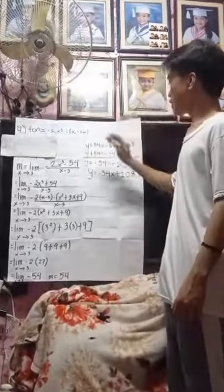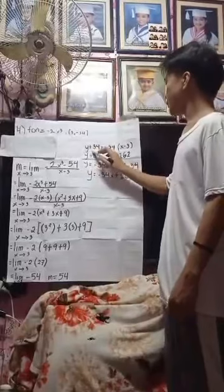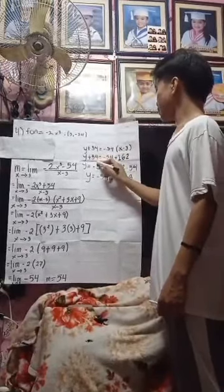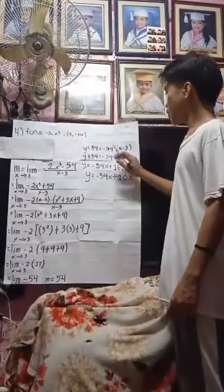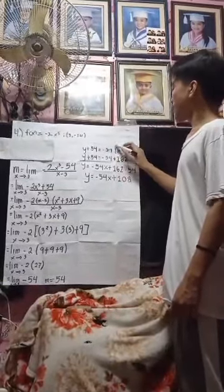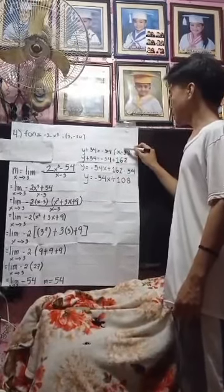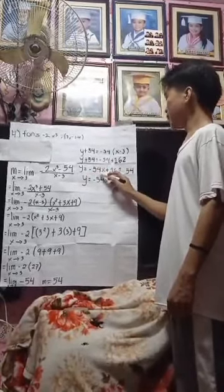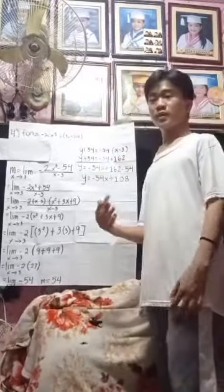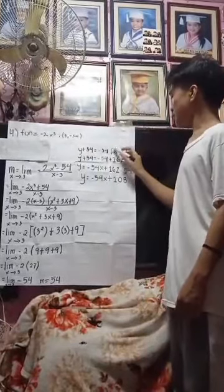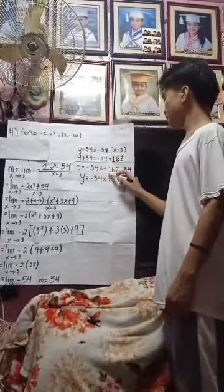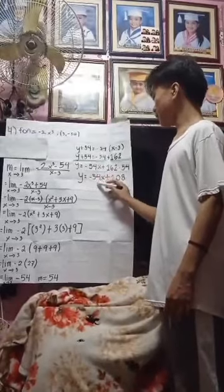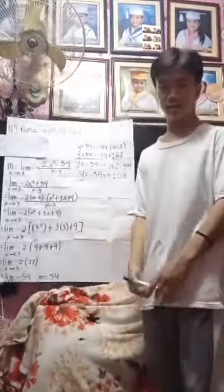Next, we proceed to find our tangent line equation: y plus 54 is equal to negative 54 times x minus 3, which gives y plus 54 is equal to negative 54x plus 162. To get 162, we multiply negative 54 by negative 3. Then y is equal to negative 54x plus 162 minus 54, giving us y is equal to negative 54x plus 108. Thank you for listening.